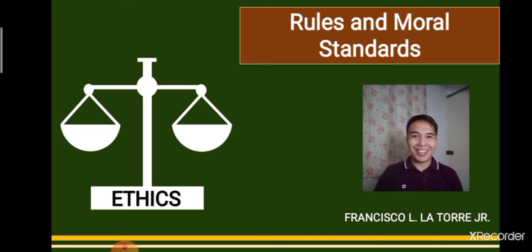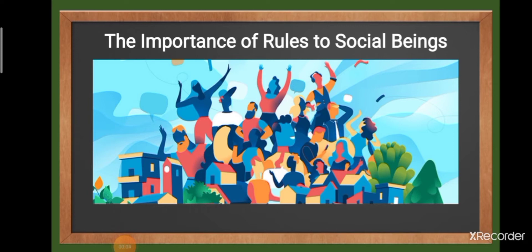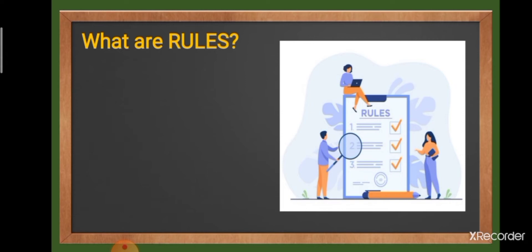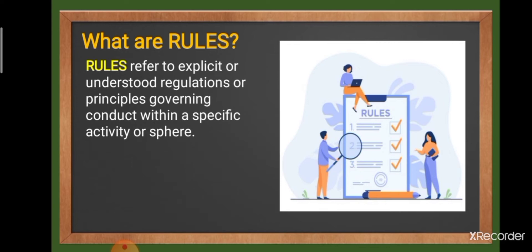There would come a point in time where we, as humans, would question the existence of rules. Maybe this is due to the fact that some rules, or even many of them, would restrict the way that we move and exercise our freedom. This lesson aims to clarify why we need rules in the society and why we cannot do away with these. Rules refer to explicit or understood regulations or principles governing conduct within a specific activity or sphere.